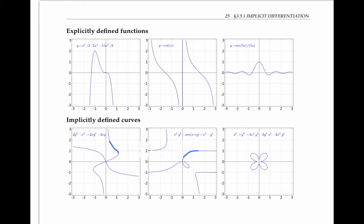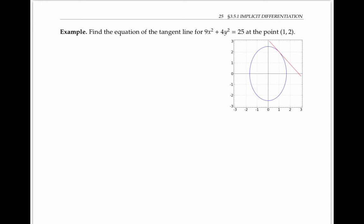As usual, the derivative dy/dx represents the slope of a tangent line. For our first example, let's find the equation of the tangent line for the ellipse 9x² + 4y² = 25, drawn below, at the point (1, 2). From the picture, it looks like the slope of this tangent line should be about negative one, but let's use calculus to find it exactly.